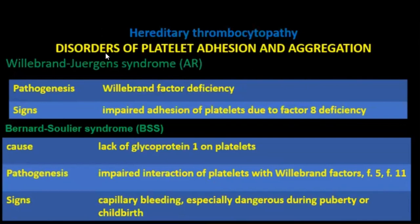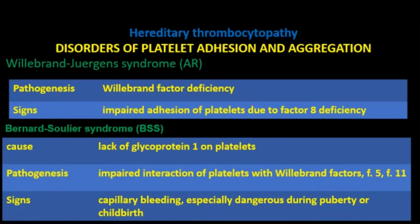Hereditary thrombocytopathy with disorders of platelet adhesion and aggregation due to factor VIII deficiency: von Willebrand factor deficiency causes impaired adhesion of platelets due to factor VIII deficiency. Bernard-Soulier syndrome: caused by lack of glycoprotein Ib on platelets, with impaired interaction of platelets with von Willebrand factor. Signs include capillary bleeding, especially dangerous during puberty and childbirth.